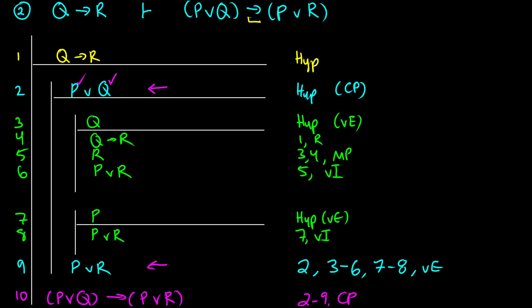At this point now, you could use this as an assumption and you could just say, oh, if we have Q arrow R, we can add anything to the Q to the antecedent. We could add that same thing to the consequent and then nothing changes. It's valid.